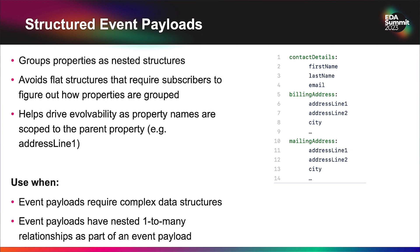Design pattern number four: structured event payloads. I often see a very flat structure in events — event type, event ID, a few other details, and then more fields added over time, making it hard to understand. You end up with things like billing address line one and billing address line two because everything is flat. Instead, structure your event payloads to nest grouped fields together — an address structure reusable for both billing and mailing address. This is especially important for event-carried state transfer where you're conveying a lot of state at once.